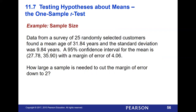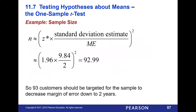Example: 25 randomly selected customers, mean age 31.84, standard deviation 9.84, 95% confidence interval with margin of error 4.06. How large a sample is needed to cut the margin of error down to two? For a 95% confidence interval, the critical Z score is 1.96. Take 1.96 times 9.84 divided by 2 (our desired margin of error), square it, and that gives 92.99. Round up to 93 customers — you can't have a partial person and rounding down puts you too low — giving us a target sample size to achieve a margin of error of two years.